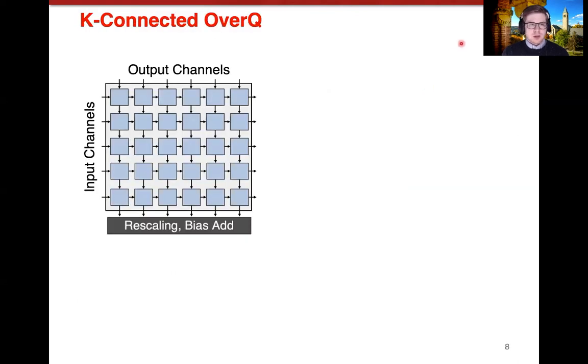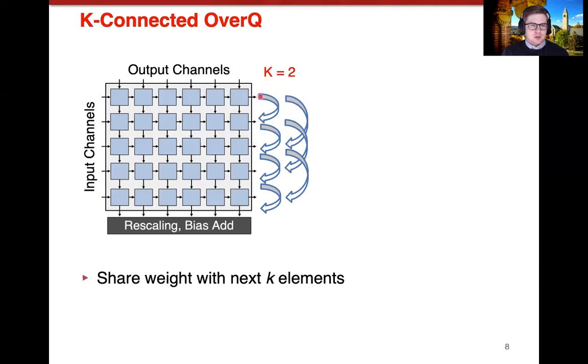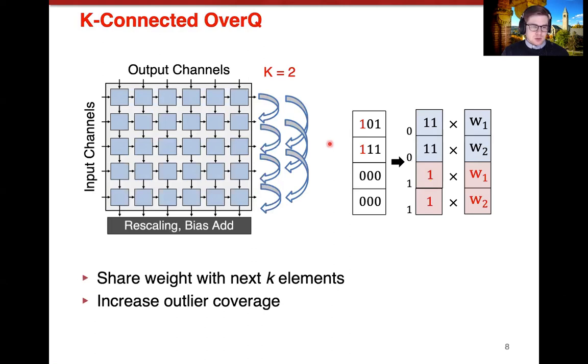So one of these methods I call K-connected overQ. This is conceptually a very simple extension of overQ to increase the outlier coverage. Other methods are possible that won't have the same amount of hardware overhead, but this is a good starting point since it should be more effective than any other reasonable method. Just to review, in the standard systolic array that is augmented with overQ, each processing element could share its weight with the adjacent processing element. When you increase K, this just becomes a more dense connection so that the first processing element here shares its weight with the second and the third and so on through the rest of the systolic array.